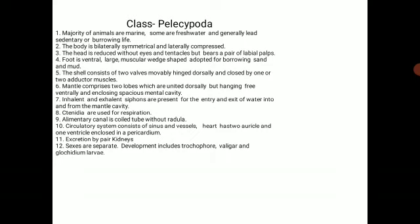The adductor muscles are helpful for closing the two valves. The mantle comprises two lobes united dorsally but hanging free ventrally, enclosing a spacious mantle cavity. Inhalant and exhalant siphons are present — water enters inside through the inhalant siphon and exits through the exhalant siphon.